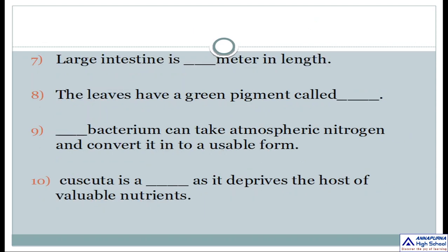Coming to the 7th one: Large intestine is dash meter in length. The leaves have a green pigment called dash. Dash bacterium can take atmospheric nitrogen and convert it into a usable form. Cuscuta is a dash as it deprives the host of valuable nutrients.